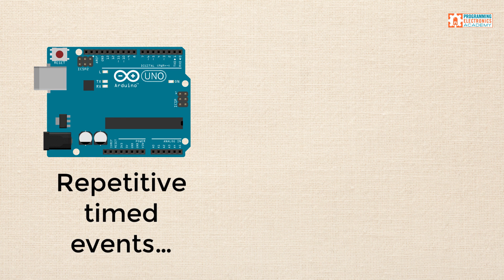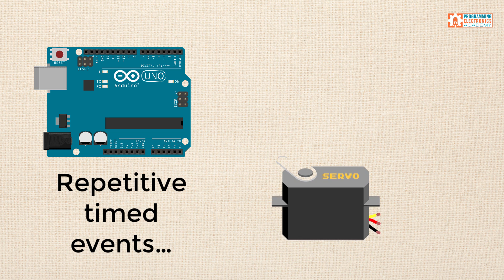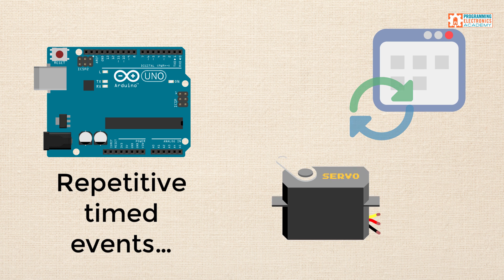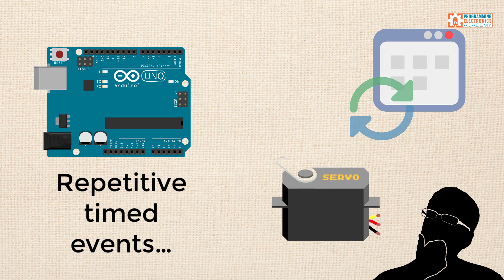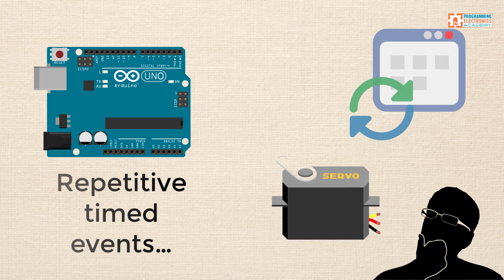Let's say you're building a project using Arduino, and you have an event that you want to have happen every so often. Maybe every three minutes you want a servo motor to move, or maybe every 20 seconds you want to update a web server with the most current sensor reading. How do you create these timed events in Arduino? That's the objective of this series of lessons — by the end, you'll be able to program repetitive timed events using your Arduino.